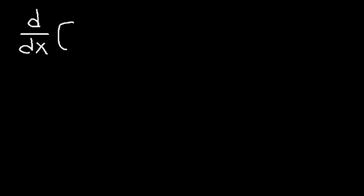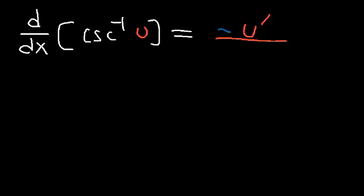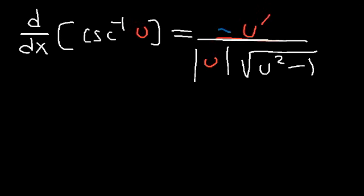The last formula you need to know is the derivative of the inverse cosecant function. Just like inverse cotangent and cosine, this one is negative. It equals negative u prime divided by the absolute value of u, times the square root of u squared minus 1 — the same as inverse secant but negative. Thanks for watching, and have a good day.